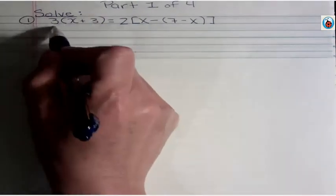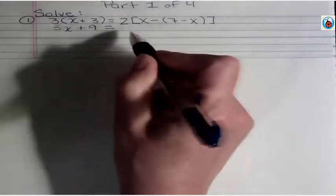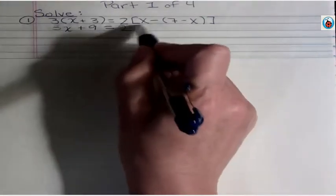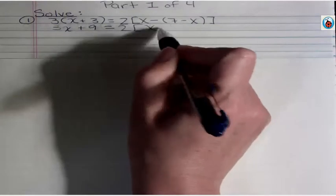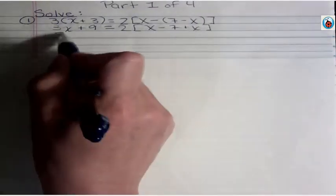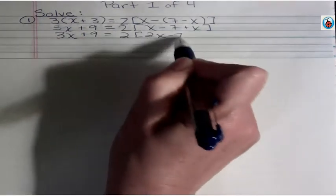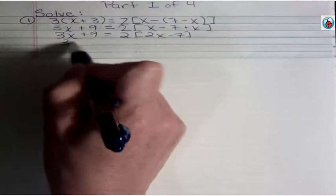This is a very simple equation here. We're going to distribute to get rid of the parentheses. Here we're going to distribute the negative, and then I'm going to simplify inside the brackets x and x, and then I'm going to distribute.